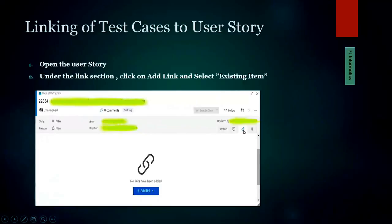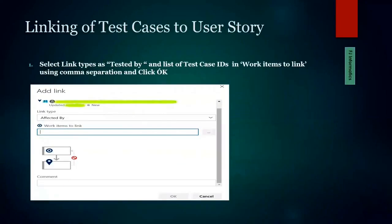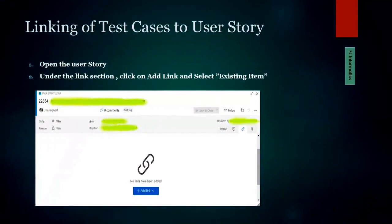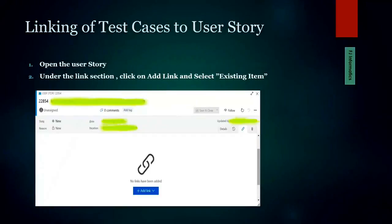In VSTS, click on any user story. Under the 'Links' section on the right-middle of the window, you'll find a link icon — click on it and then click 'Add Link.' You'll get two options: 'Add Existing' or 'Add New Item.' Click 'Add Existing' because you're not creating a new test case — you're linking to existing ones.